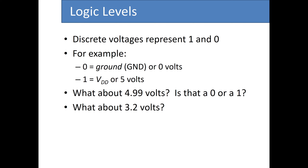Before I begin, it's a good idea to talk about logic levels. The inputs and outputs are either zero or one, but in reality zero or one is represented as some voltage values in our circuit. Zero can be considered as ground, GND, or zero volts. On the other hand, one — usually referred to as VDD or five volts — is a representation of a true value for a logic signal.